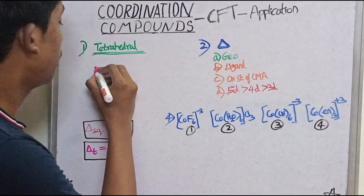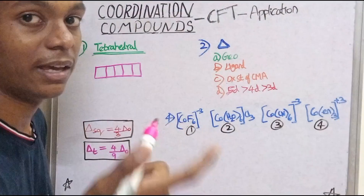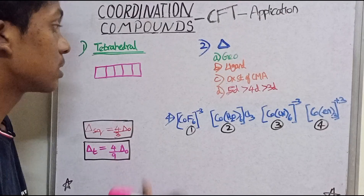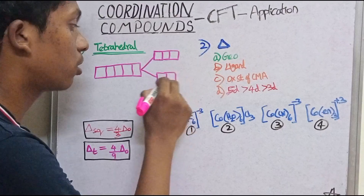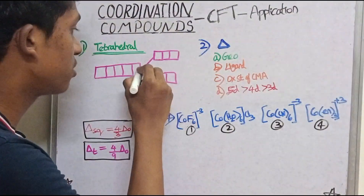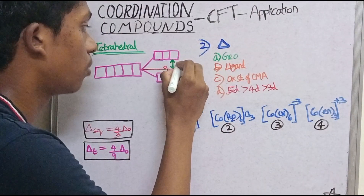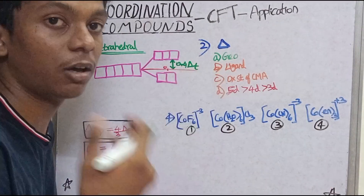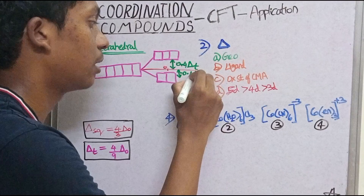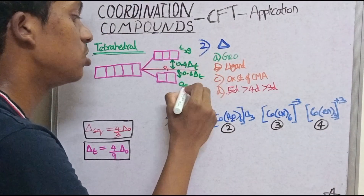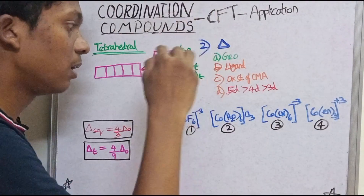There are 5 d-orbitals: dxy, dxz, dyz, dz², and dx²-y². In tetrahedral splitting, the lower set is T2g (dxy, dxz, dyz) and the upper set is Eg (dz², dx²-y²) — the opposite of octahedral. The barycentre is at 0. In tetrahedral, the upper level is +0.4 delta-t and the lower level is -0.6 delta-t, where delta-t is the tetrahedral splitting energy.